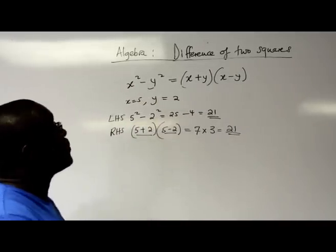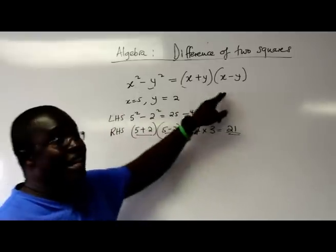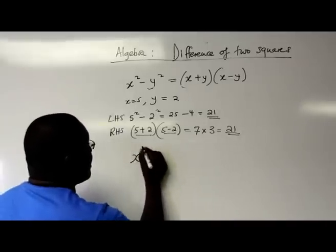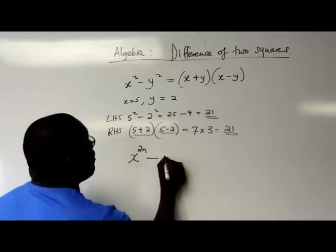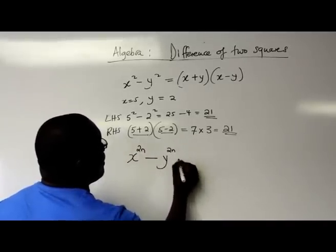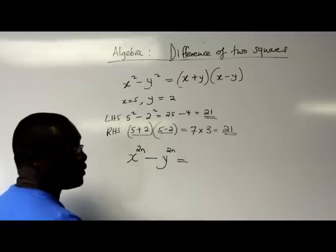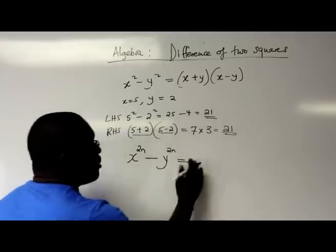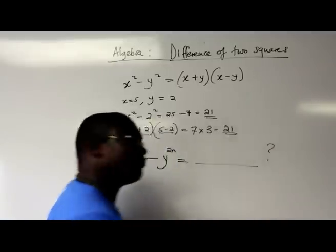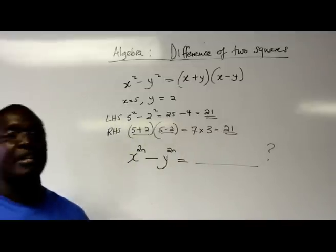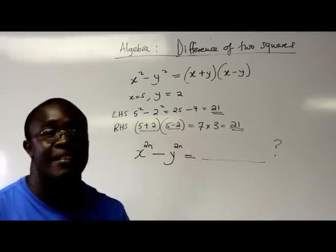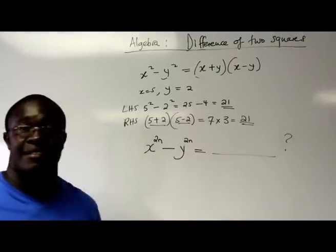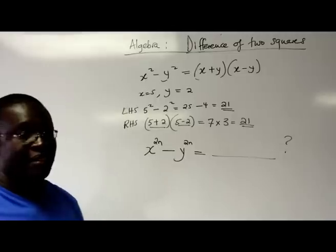But difference of two squares doesn't just stop here. The generalization now says: x to the power of 2n minus y to the power of 2n is equal to — I'll give you a moment to think — where the 2n represents every even number.